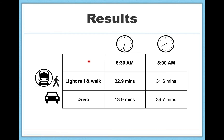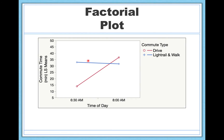Factorial analyses of variance will tell you all of that information and analyze it statistically — it's a great way to make these kinds of decisions. Factorial plots are typically what we use to display and represent analysis of variance data. On the y-axis we have commute time — the response variable. On the x-axis is time of day: 6:30 a.m. versus 8 a.m. Commute type is shown as two lines: red for driving, blue for taking the light rail and walking.